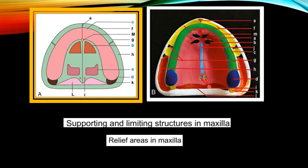To summarize the limiting structures of the maxillary arch: labial frenum, labial vestibule, buccal frenum, buccal vestibule, hamular notch, fovea palatine, and posterior palatal seal area. So in this picture we have learned the supporting structures and limiting structures of the maxilla.